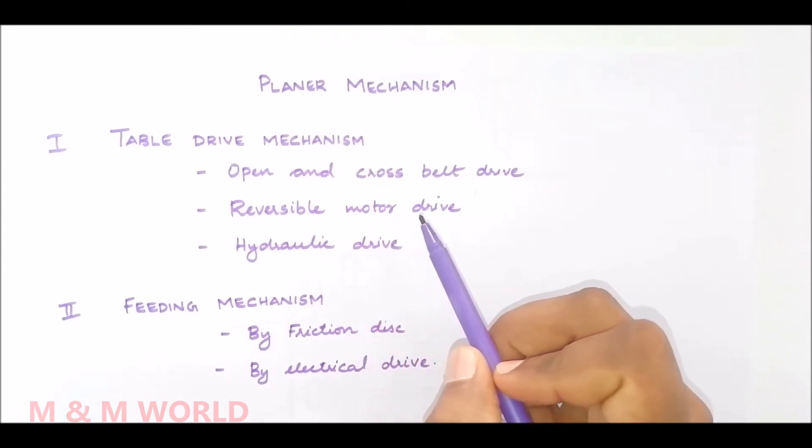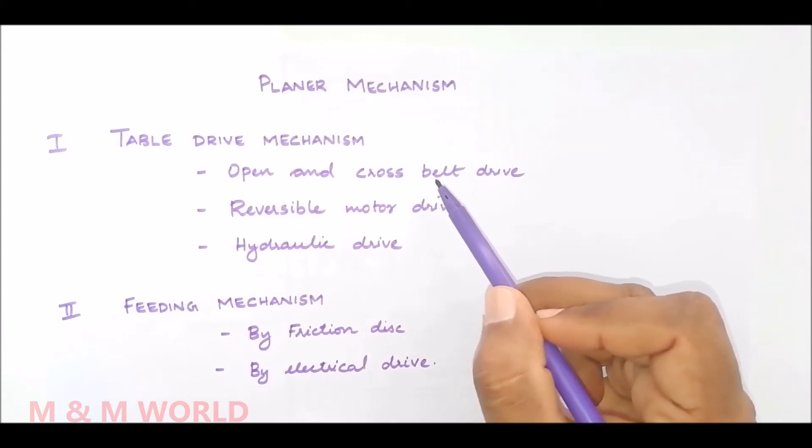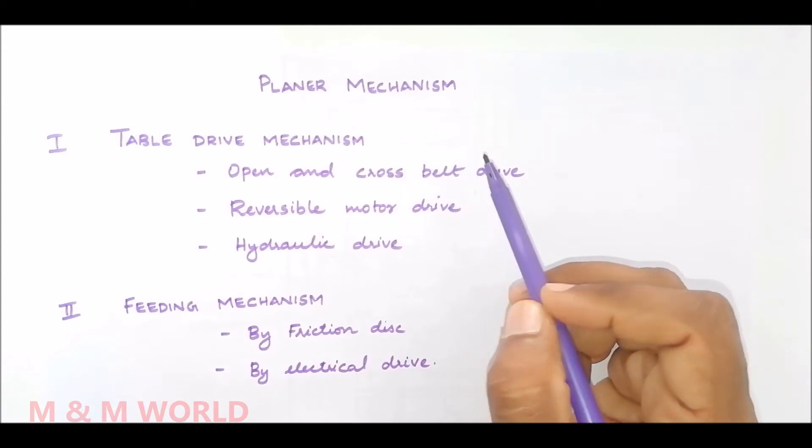The table drive mechanism is of three types. First one is open and cross belt drive, second one is reversible motor drive, and third one is hydraulic drive. By using these different mechanisms we can drive the table in case of a planar machine.